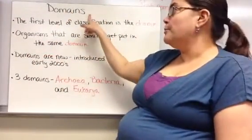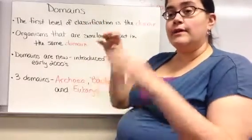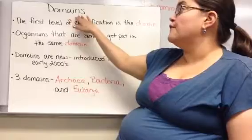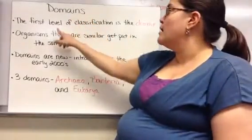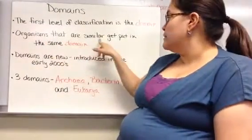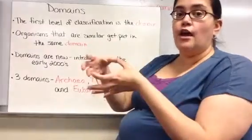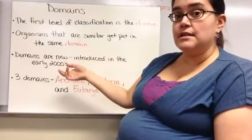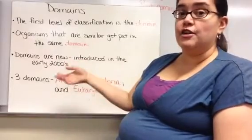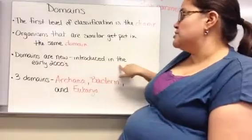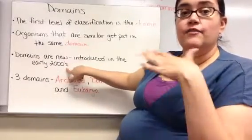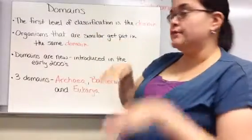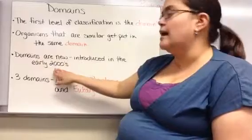The first grouping we put organisms into is called a domain. After sorting into domains, we narrow down into more and more specific groups, which will be covered in a future video. A domain is the first level of classification — organisms that are similar get put in the same domain. Domains are a fairly new idea, introduced in the early 2000s; before that, the highest level was called the kingdom. Domains added a level to the top of classification.